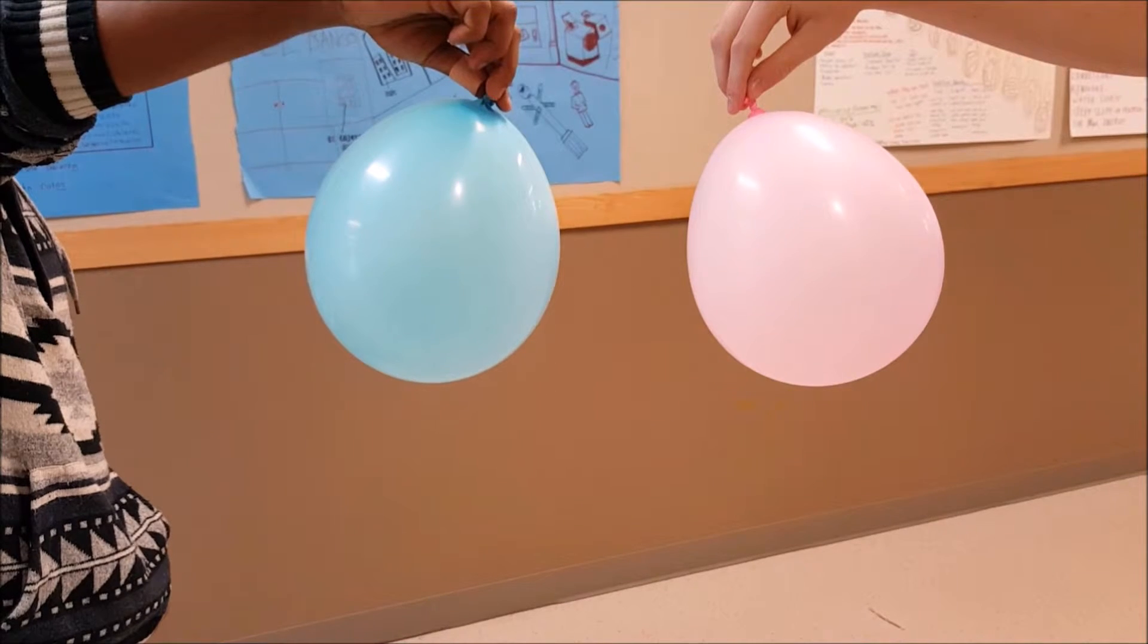By rubbing each balloon with rabbit fur, the balloon was able to extract electrons from the rabbit fur and become negatively charged. Each balloon was rubbed with the same material, and thus both balloons became negatively charged.